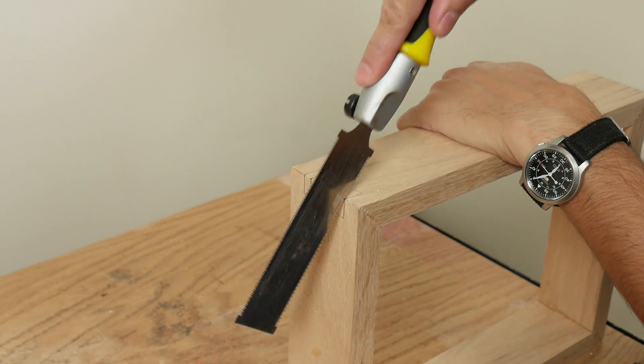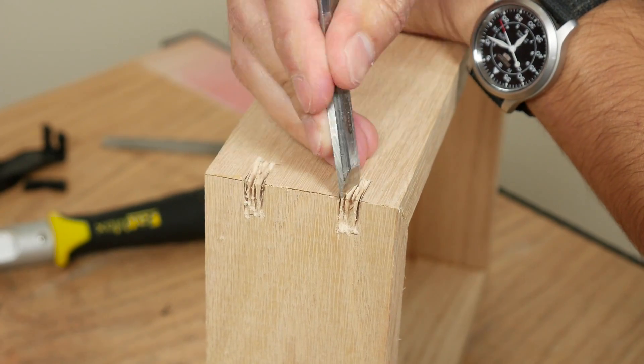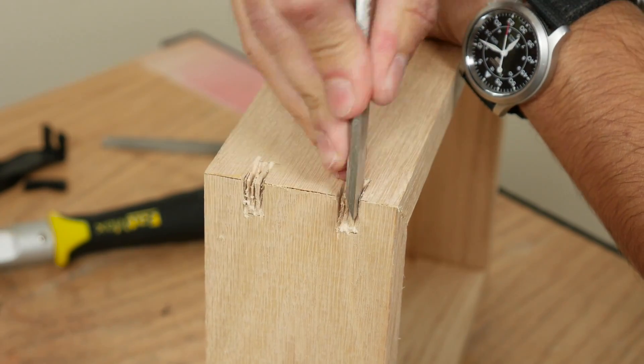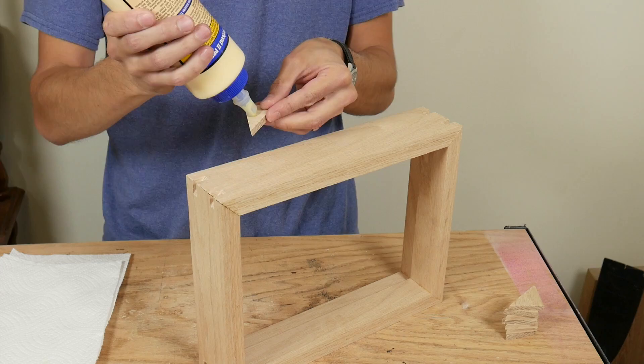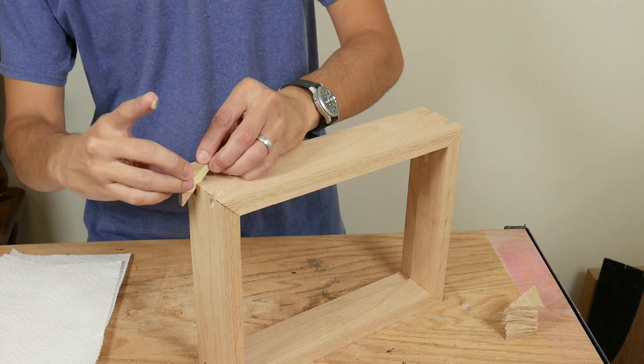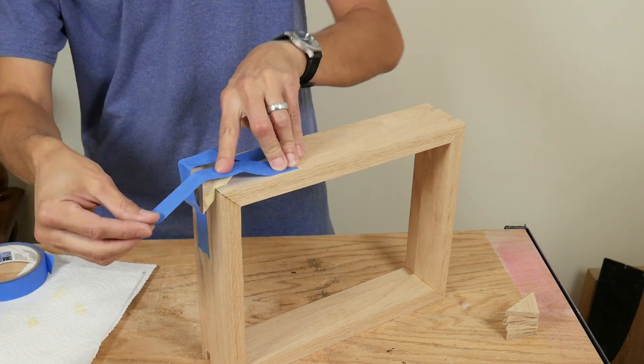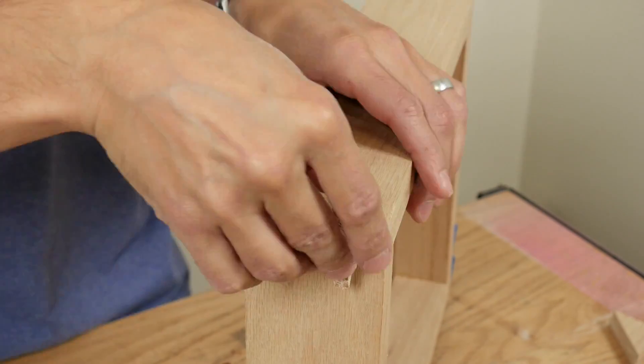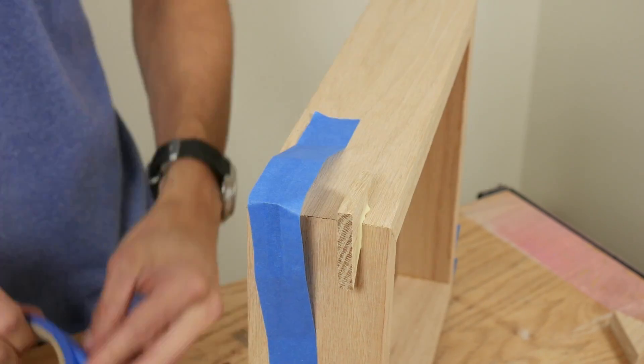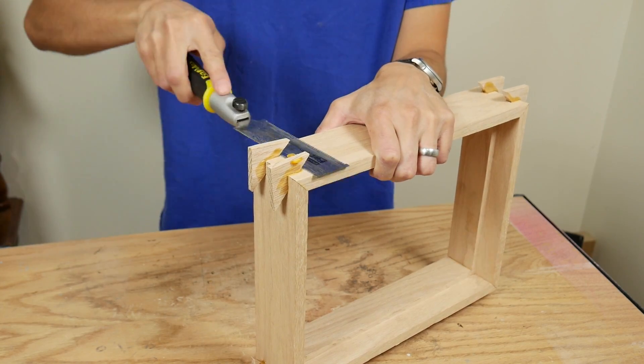I used a handsaw, a chisel and some files to cut slots for these splines. I cut two slots in each corner. Then I glued the triangular splines into the slots and let them dry. I cut off the excess with a flush cut handsaw.